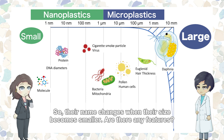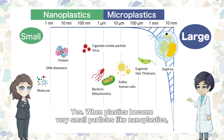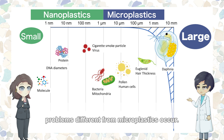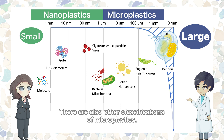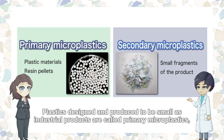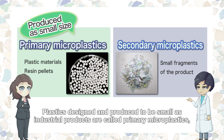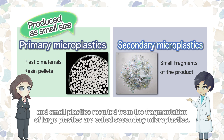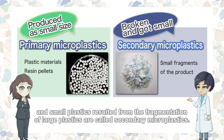Are there any features? Yes, when plastics become very small particles like nanoplastics, problems different from microplastics occur. I will explain this later in detail. There are also other classifications of microplastics. Plastics designed and produced to be small as industrial products are called primary microplastics, and small plastics resulted from the fragmentation of large plastics are called secondary microplastics.